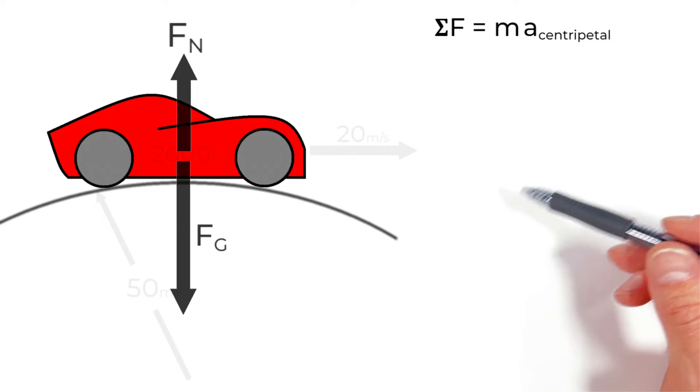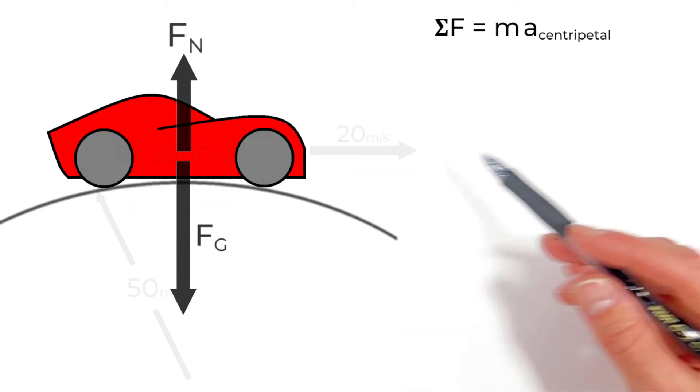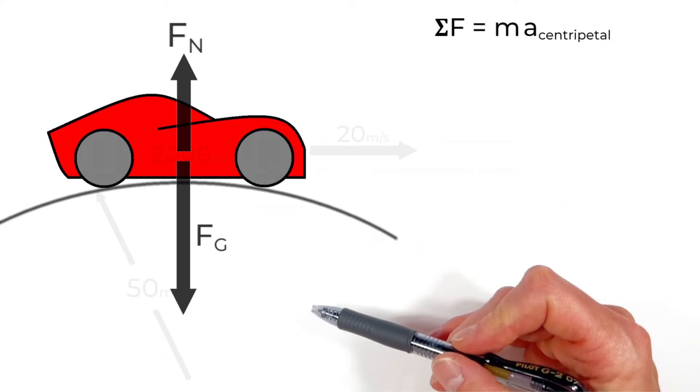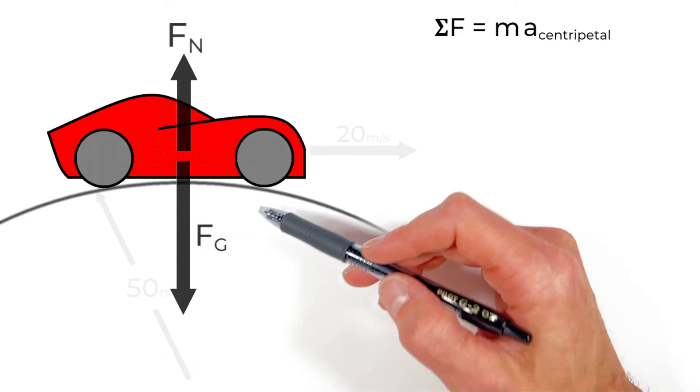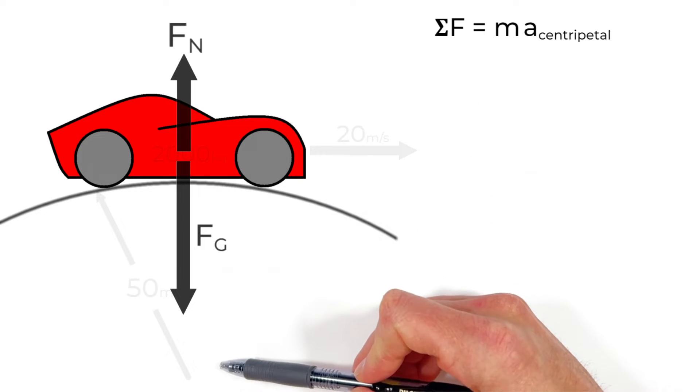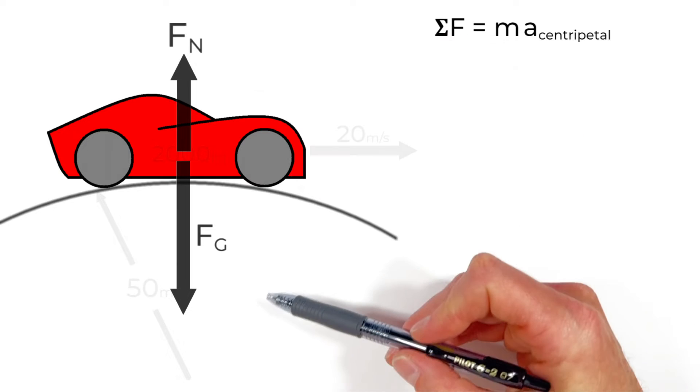Unlike with an orbit where there's only one force acting centripetally in the case of this car we have two forces gravity and the normal force and the important part here is they're in opposite directions. Gravity is acting inward toward the center of the circle and the normal force is acting outward.